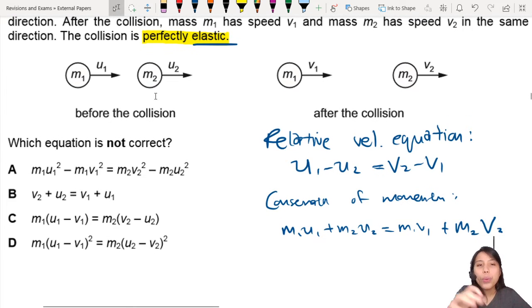So they ask us which equation is not correct. We got a whole bunch of equations, so we got to check all of them. Alright, so we have two equations here. One has mass, one does not have mass in it.